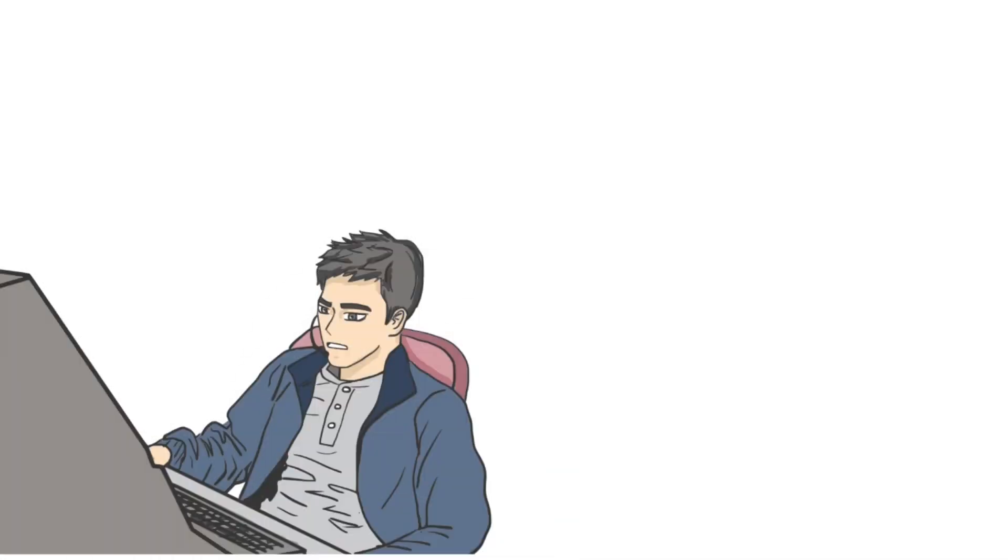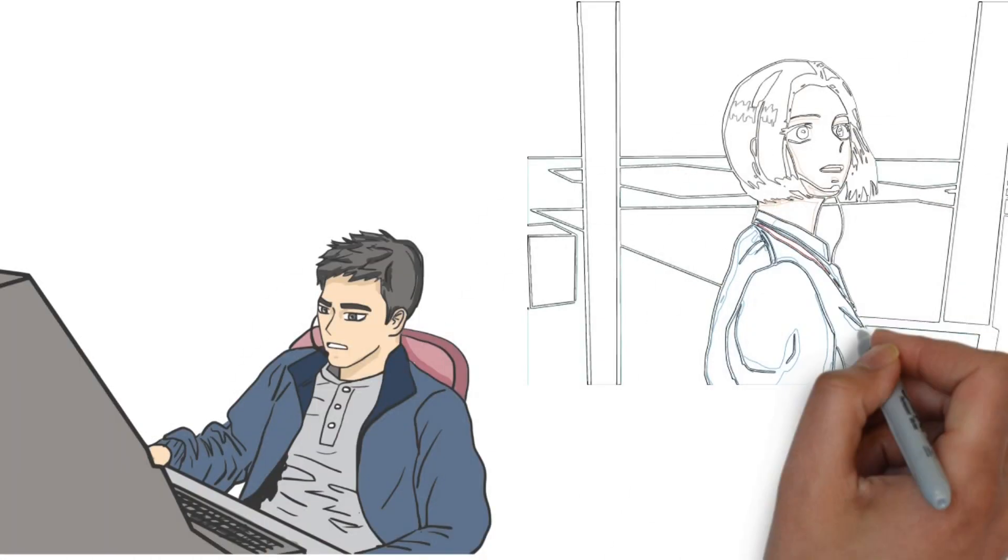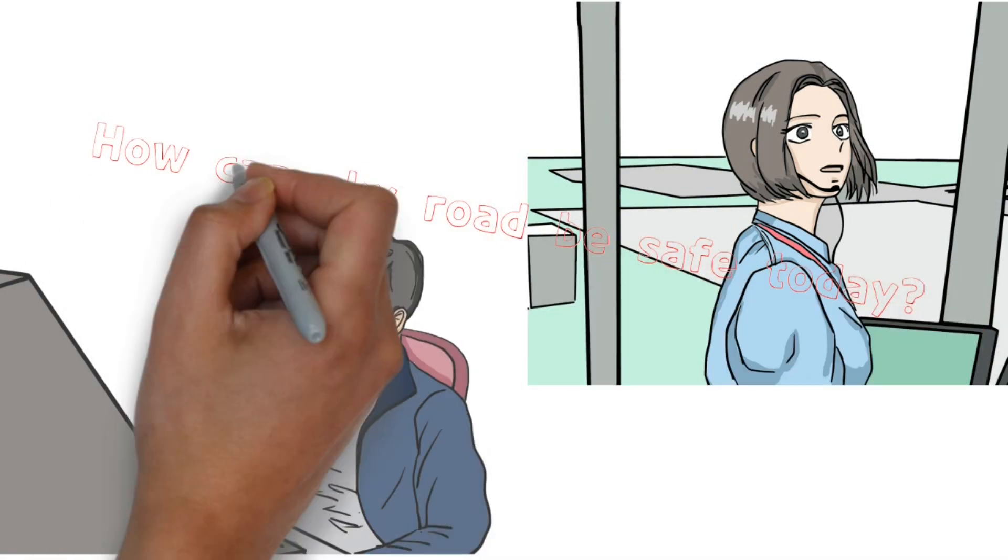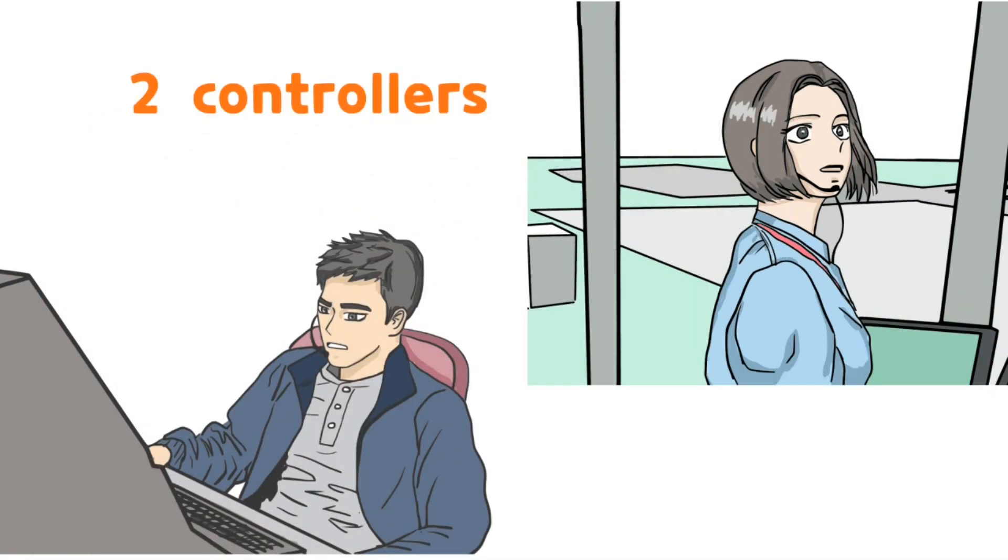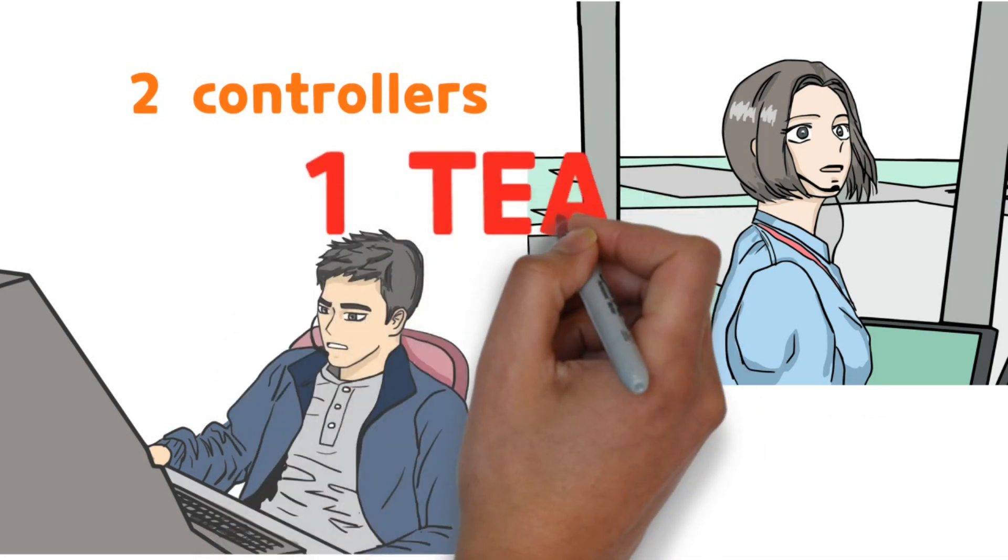There are many differences, but flight safety is secured solid when they interact closely. How can the sky road be safe today? This is because there are two controllers in one team.